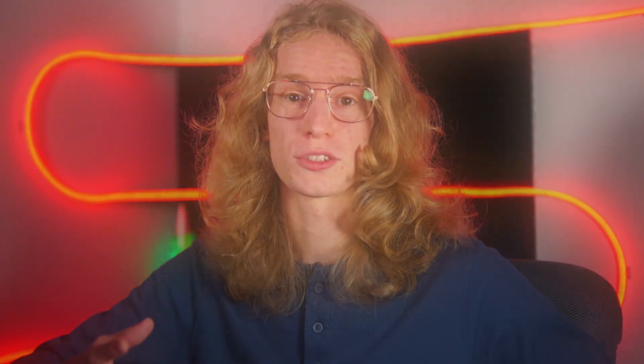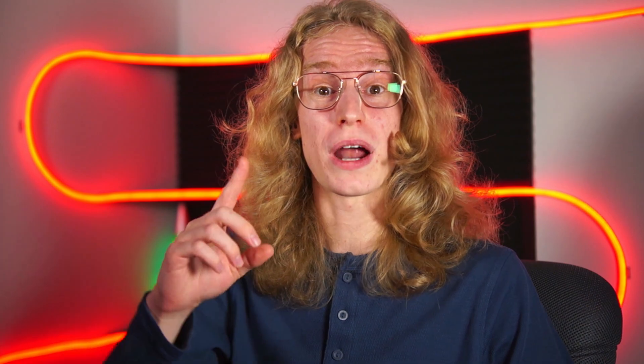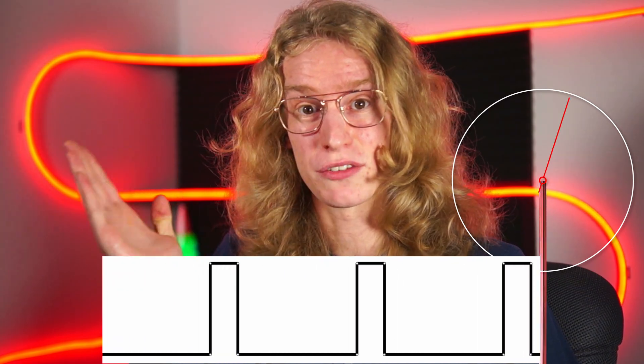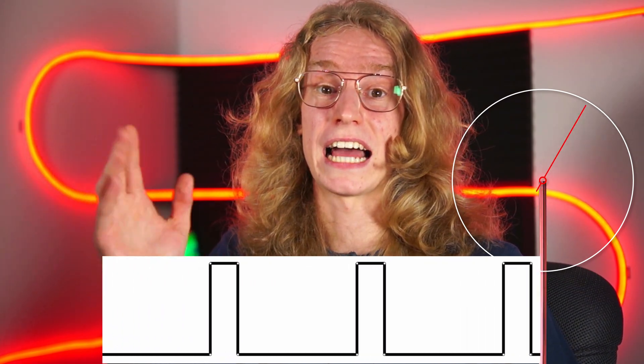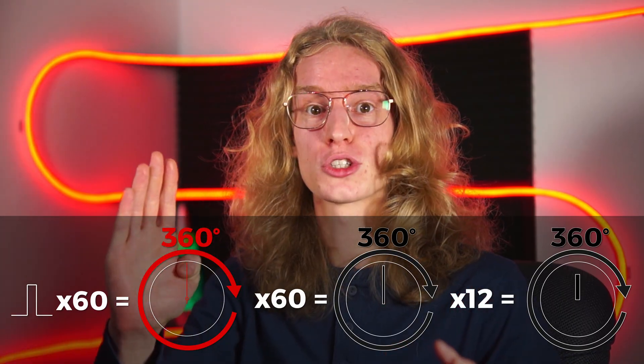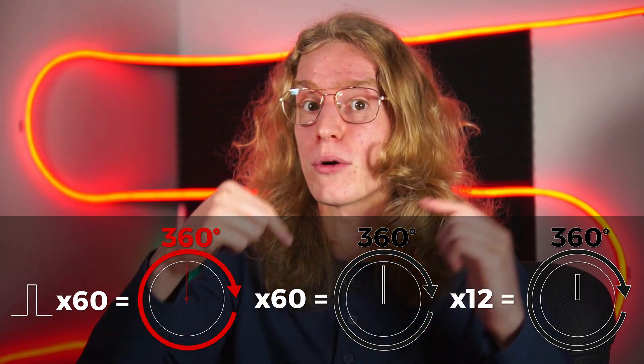For the second part, we need something that's going to count those pulses from the clock's heart. In your grandma's clock, at each and every single second it moves the second's hand just a little bit. It's adjusted so that 60 pulses make a whole turn. There are gears behind the clock with their ratio adjusted so that the second's hand can also control the minutes and hours hand.